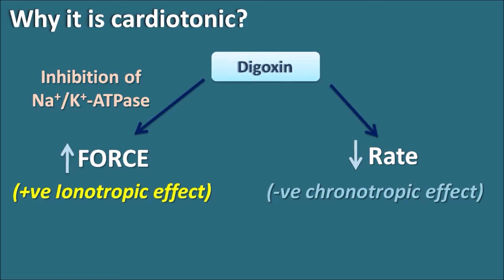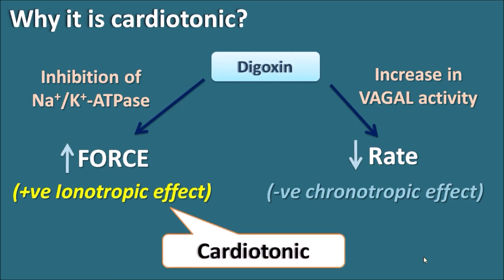By inhibition of the sodium-potassium ATPase pump, intracellular calcium levels increase, which increases the force of contraction. At the same time, Digoxin decreases the rate of contraction by increasing vagal — that is, parasympathetic — activity. By increasing parasympathetic activity, it decreases atrioventricular (AV) conduction, thereby decreasing the rate of contraction. So Digoxin is a cardiotonic — not a cardiac stimulant — as it increases force but not rate of contraction.